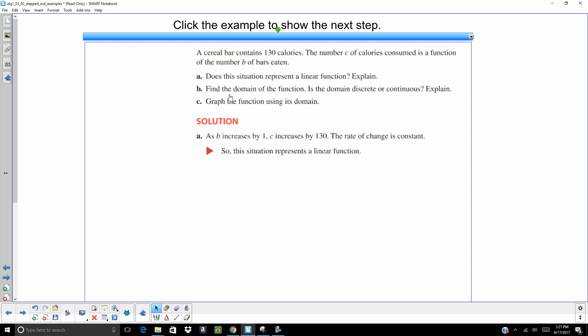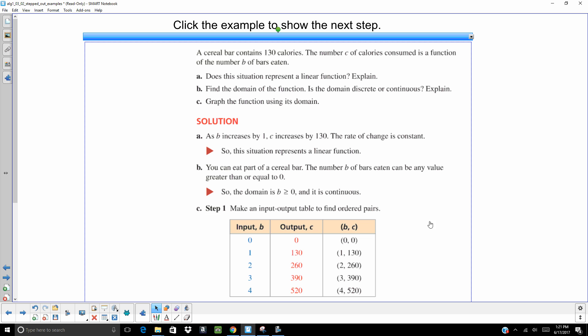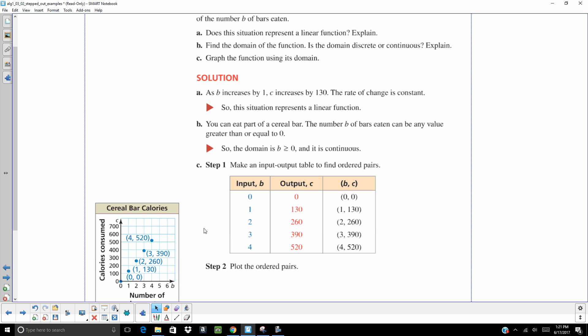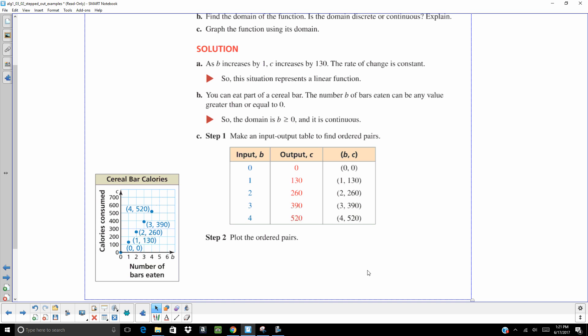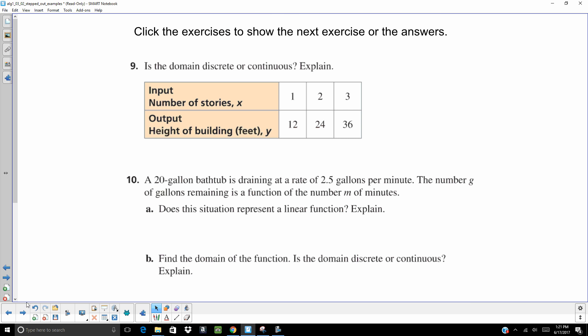So part B, we want to find the domain of the function. Is the domain discrete or continuous? Well, you can eat part of a cereal bar. So it is continuous. Part C, we want to graph the function using its domain. So we make an input output. And there is our graph. Number of bars eaten. Number of calories consumed. All right.